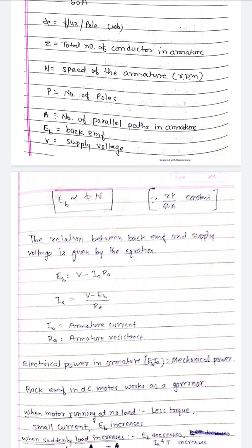EB equal to V minus IA Ra. IA equal to V minus EB upon Ra. IA is armature current, Ra is armature resistance.